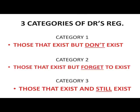We categorize our doctors into three. Category one: those that exist but don't exist online — meaning your file is in the MDCN, but you don't have online access. Category two: you exist, but you forget to exist — your file is in the MDCN, but you forgot your password and how to log in. Category three: you have your password and you can log in.